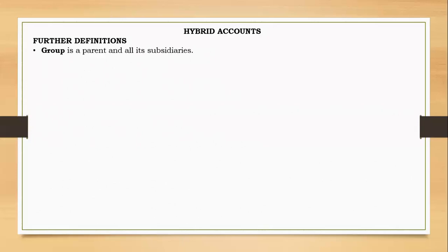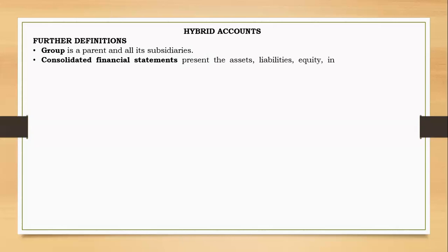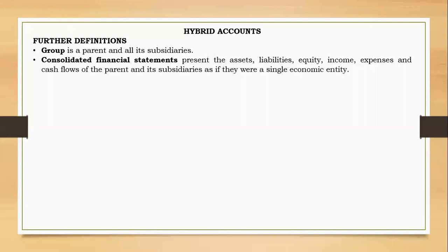A group is a parent and all of its subsidiaries. A group does not constitute an associate — it is just a parent and all of its subsidiaries. When we say consolidated financial statements, a parent may have two subsidiaries, but when you consolidate, you present a single financial statement — a statement of financial position, profit or loss, and others. Consolidated financial statements present the assets, liabilities, equity, income, expenses, and cash flows of the parent and its subsidiaries as a single economic entity.